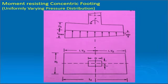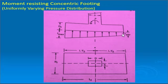In the second case of uniformly varying pressure, the column is exactly at the center but is subjected to a moment. Because of the moment acting to one side, the pressure increases on that side and decreases on the other, giving a varying pressure diagram. Shear force and bending moment must be calculated according to this upward varying pressure diagram.